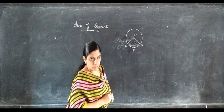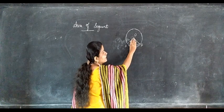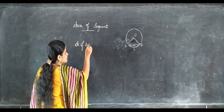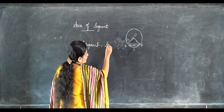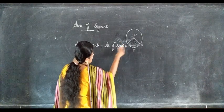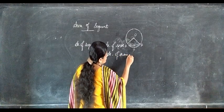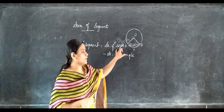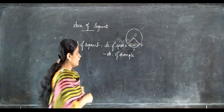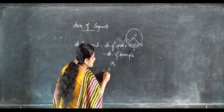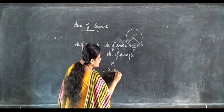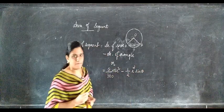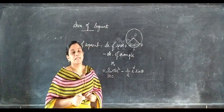So, area of segment is equal to area of sector minus area of triangle. We can use the formula: theta by 360 into π r square minus half r square sine theta.